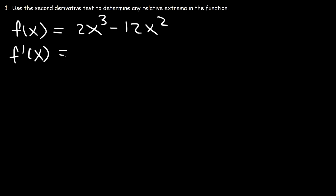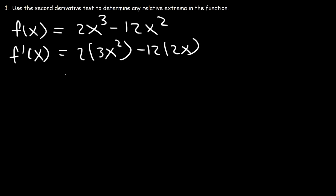Let's determine the first derivative so we can identify any critical numbers. The derivative of 2x³ is 6x², and the derivative of 12x² is 24x. So f'(x) = 6x² - 24x. Now to find the critical numbers, we need to set the first derivative equal to 0.